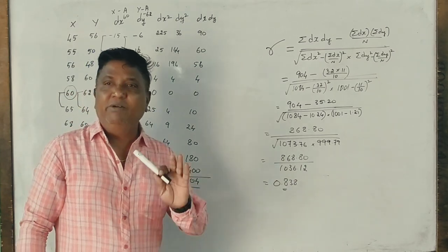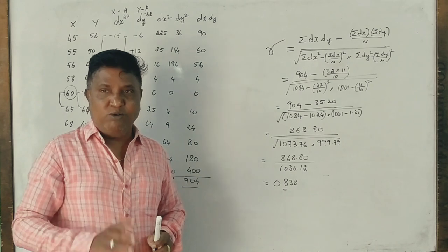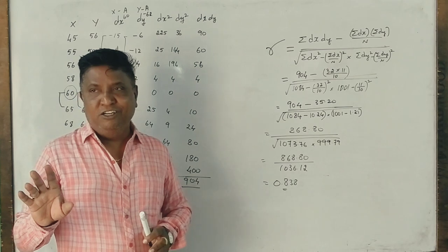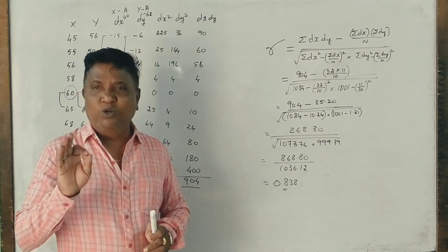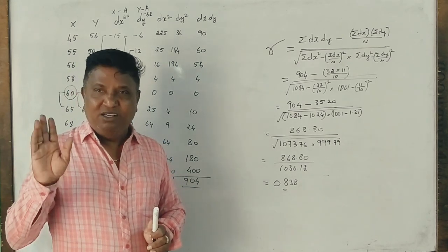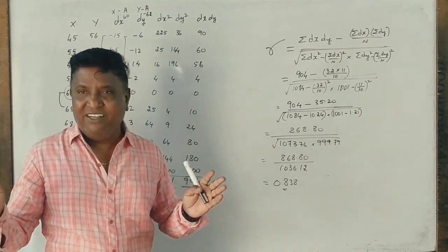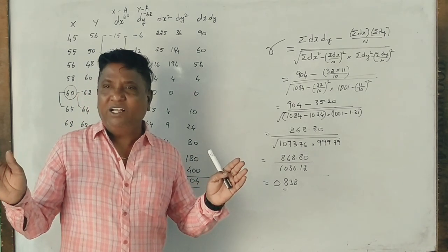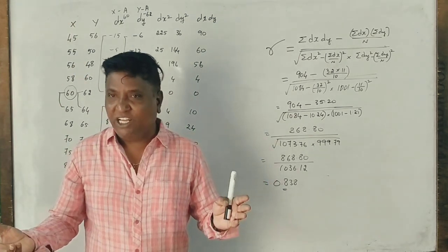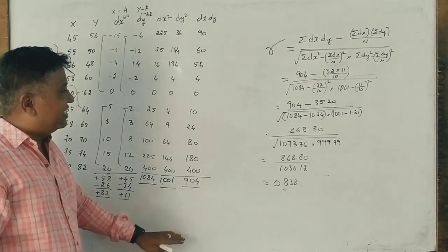The correlation is always less than one. If you have more than one, that will be 100% wrong. If the correlation is less than one, the relationship is correct. Either plus one or minus one indicates a perfect relationship.